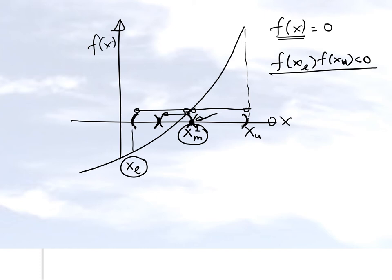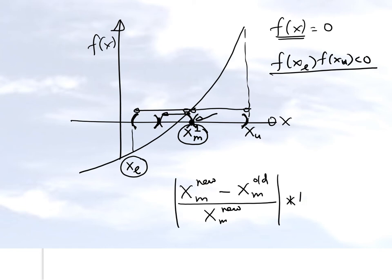What you're going to do is compare. Suppose you have a new midpoint found from the current iteration and an old midpoint from the previous iteration. You compare the two and multiply by 100 to get the absolute relative approximate error. Based on this, you can compare it with a pre-specified tolerance, which might be given as a percentage or in terms of number of significant digits you want to be correct in your answer. That's how you develop this algorithm.